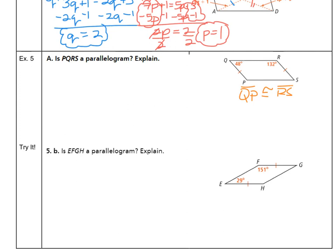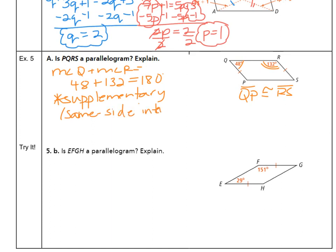And then we have angle Q and angle R. Well, if we add them together, the measure of angle Q plus the measure of angle R, that's 48 plus 132, that equals 180, which means they are supplementary. And if those two angles are supplementary and they're same side interior angles, that means that QP is also parallel to RS. If same side interior angles are supplementary, then the lines are parallel. So then we can mark that arrow on the picture as well. And that's enough to justify that it's a parallelogram. So yes, it is a parallelogram.